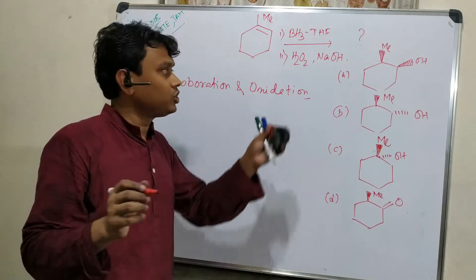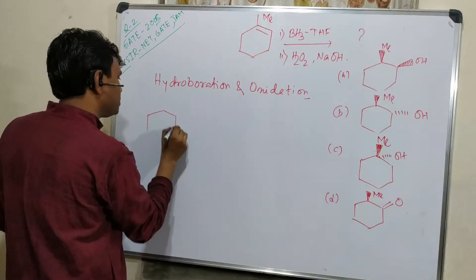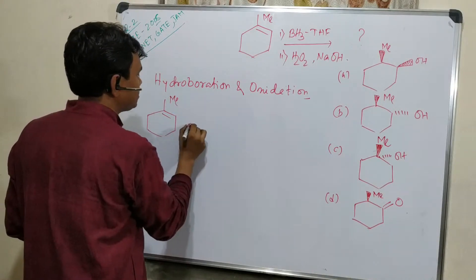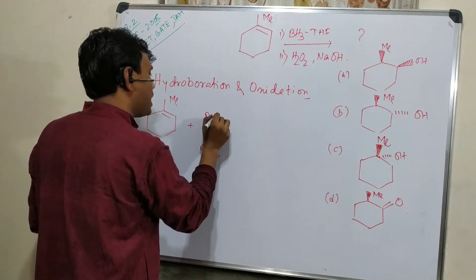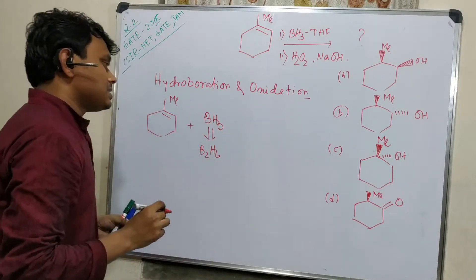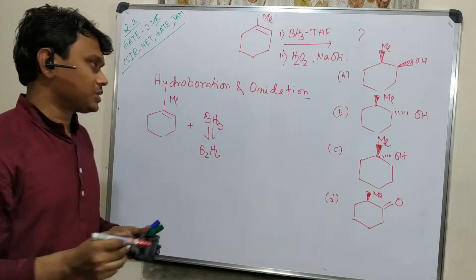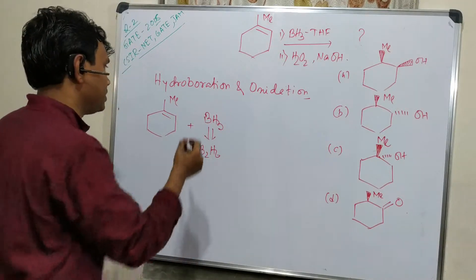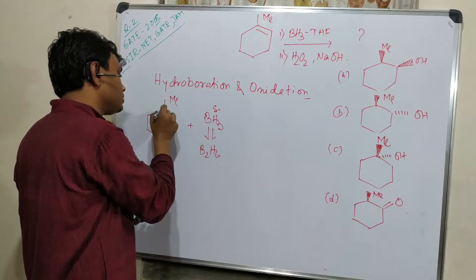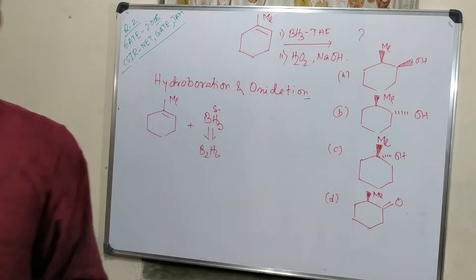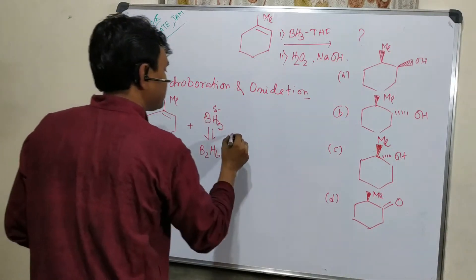This reaction is very important along with 9-BBN, Sia2BH, etc. I've made all those videos. Let's start. What happens when this molecule, methyl cyclohexene, reacts with BH3? BH3 is obtained from B2H6 diborane. We know that the hydrogen will attach to that carbon which is poorer in hydrogen, because this hydrogen is delta minus.